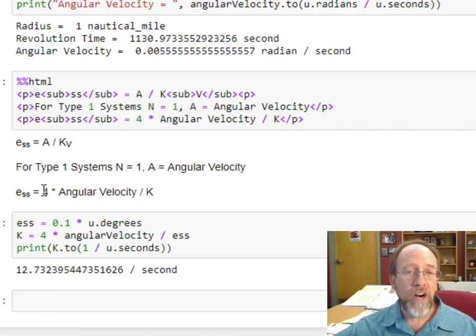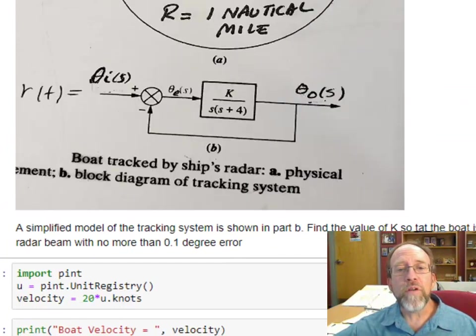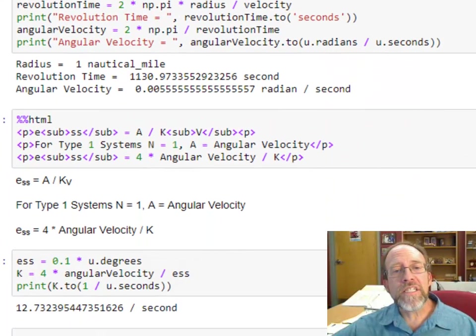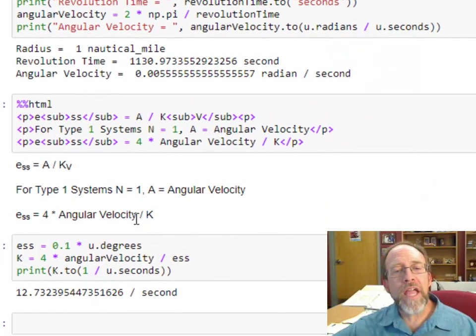A is angular velocity, so I've got the error, which is ESS, that's the error, which is going to be the error in the radians, in the degree error that we have right here. We're at everything else in radians, which is 0.1 degree error. That error is going to be equal to four times the angular velocity over k, and I'm solving for k.